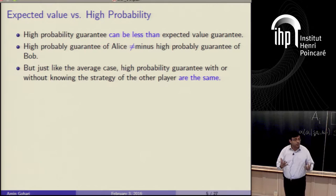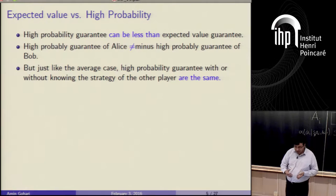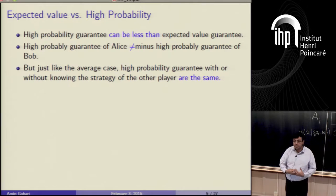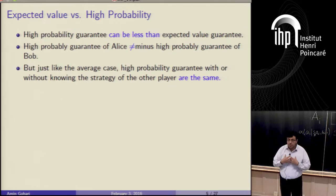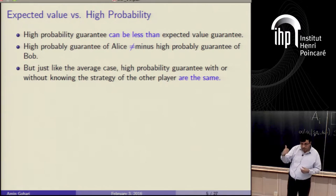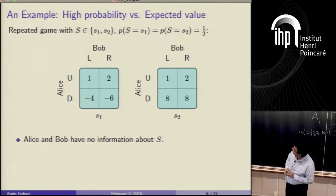There are similarities and differences between the answers. First, high probability guarantee can be strictly less than expected value guarantee—I'll show this through a simple example. In zero-sum games, what I can guarantee is minus what you can guarantee. But here that's no longer the case: what I can guarantee with high probability is not minus what you can guarantee with high probability. However, there is a similarity: if I'm a player and I know your strategy or I don't know it, it's the same—I can guarantee the same. So there is a universal strategy for one player that works against all strategies, just like Nash equilibrium.